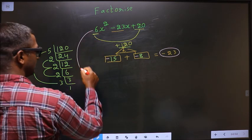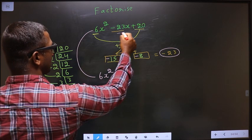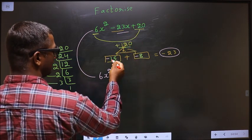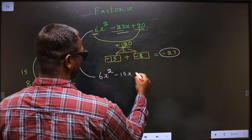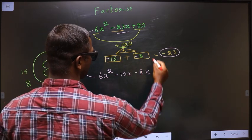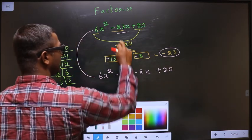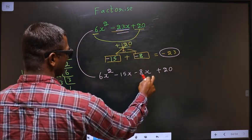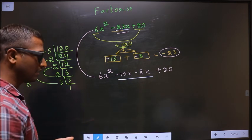Next. Now, this will change to. In place of minus 23x, now we should write minus 15x minus 8x plus 20. Clear? In place of minus 23x, I have written minus 15x minus 8x.